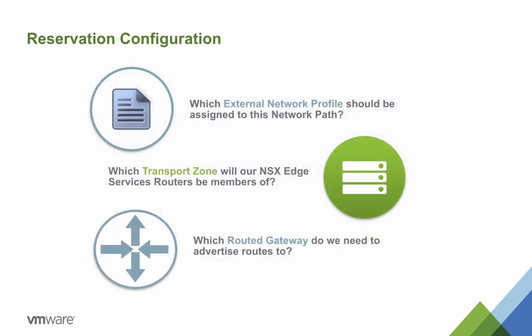Reservations are responsible for defining the storage and compute resources available to a given business group. Apart from storage and compute, reservations are also responsible for the placement of virtual machines and NSX Edge Services routers onto the appropriate port group or logical switch through network path settings. They also handle the request and allocation of network details from the appropriate network profiles to these virtual machines and edge services routers. There are three key configuration areas to specify within a reservation for dynamic network provisioning: the external network to associate with the defined network path, the transport zone which edge services routers will be a member of, and the router gateway to which routes will be advertised in the event of using a routed network profile.